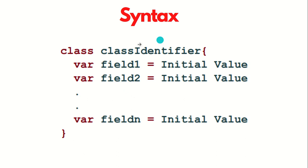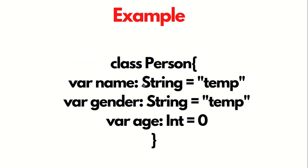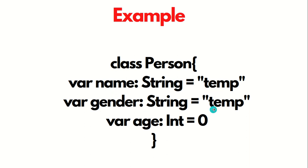As an example, we have the class Person, which has three fields: name, gender, and age, with initial values of temp, temp, and zero respectively.